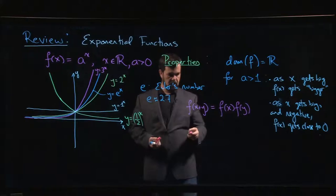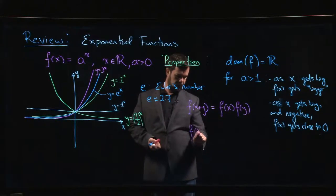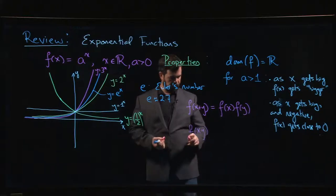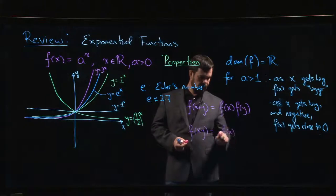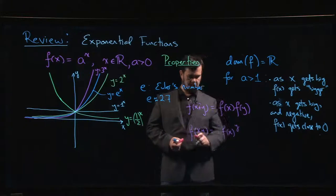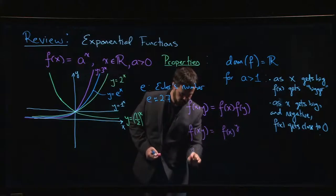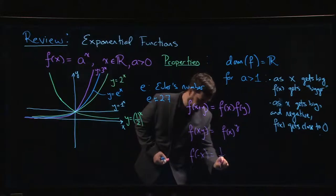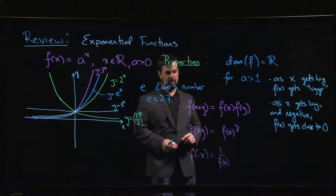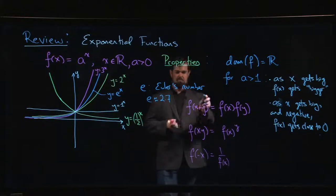We know that f of x times y is the same thing as f of x to the power of y. And we know that f of negative x is 1 over f of x.